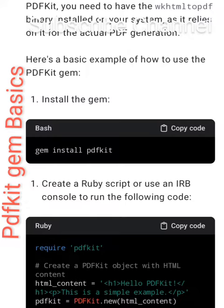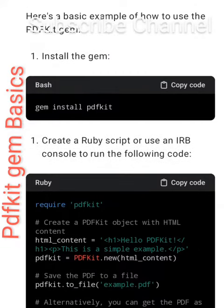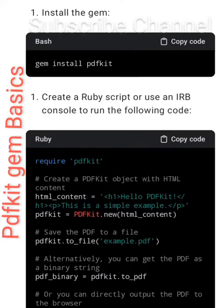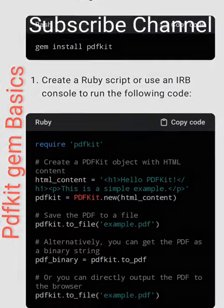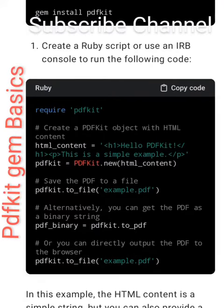Here's a basic example of how to use the PDFKit gem. First, install the gem with: bash gem install pdfkit.